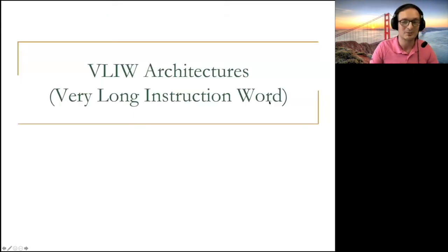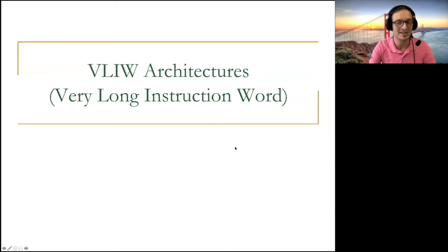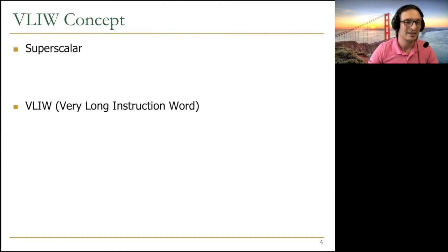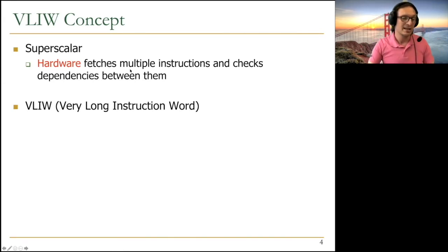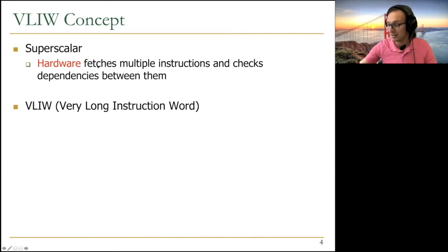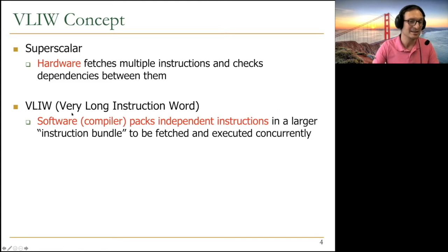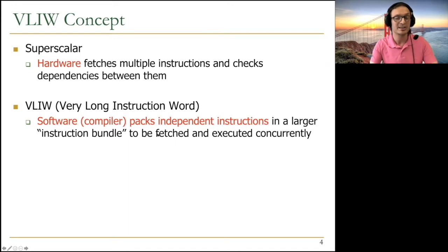VLIW stands for Very Long Instruction Word architectures. It is an instruction set architecture paradigm whose philosophy is to keep hardware as simple as possible while software does the hard work to extract parallelism. In superscalar processing, hardware fetches multiple instructions and checks dependencies. The compiler can help by scheduling instructions, but the superscalar processor still provides hardware dependency checking support. VLIW has a different principle.